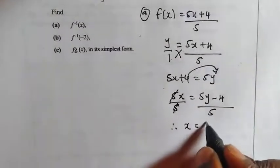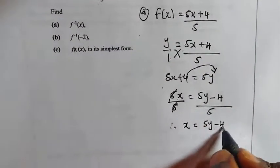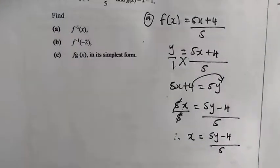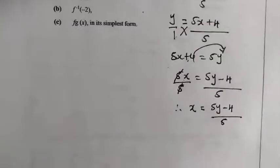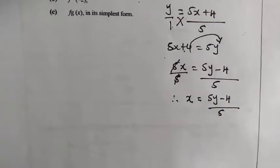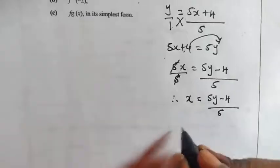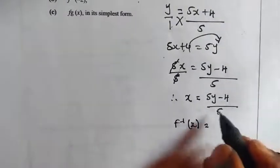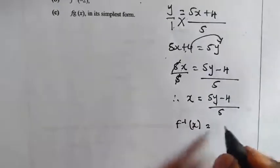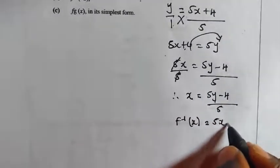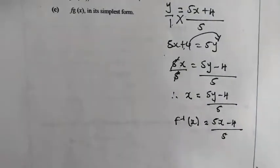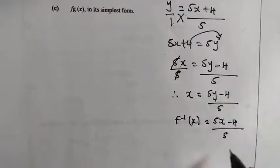So we have x equals 5y minus 4 over 5. The question was to find the function inverse of x, so our final answer: the function inverse of x is equal to 5x minus 4 over 5. This is our answer to question a.